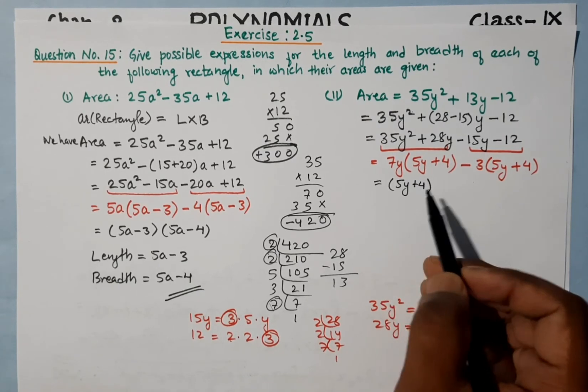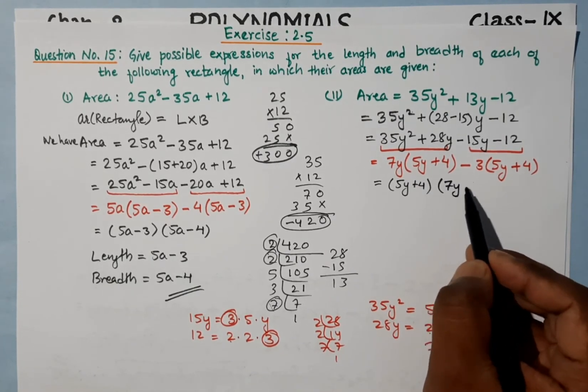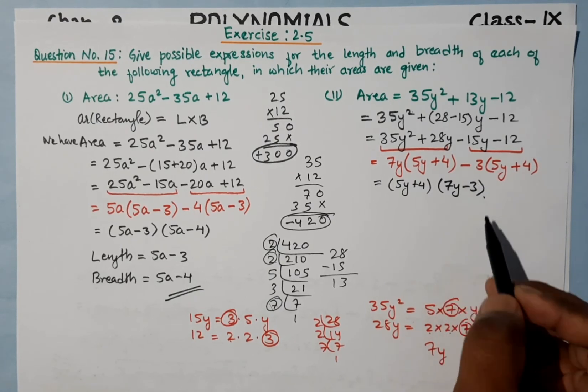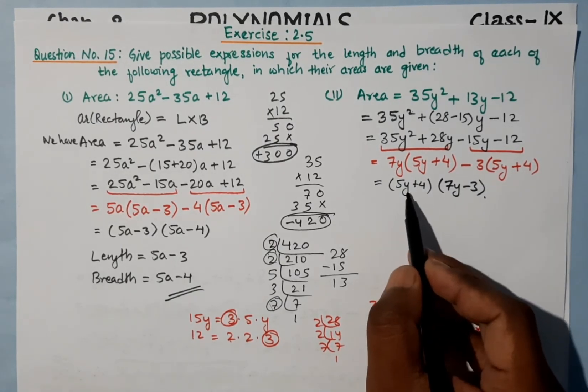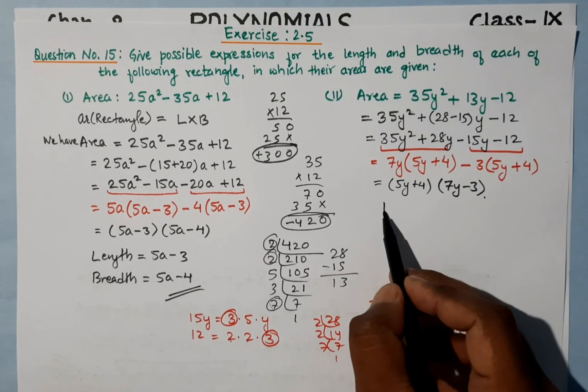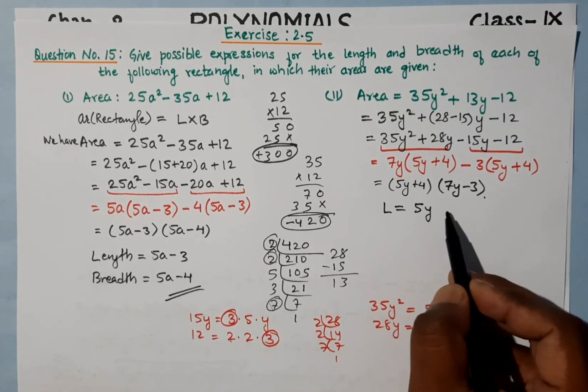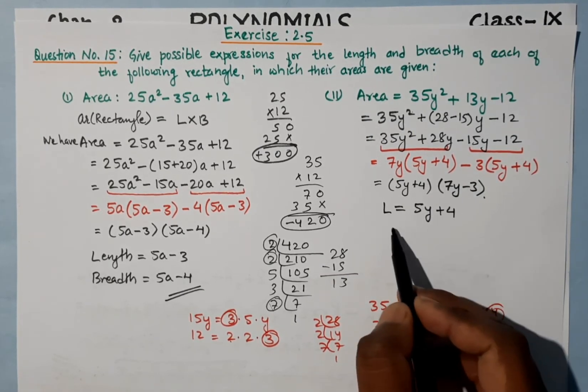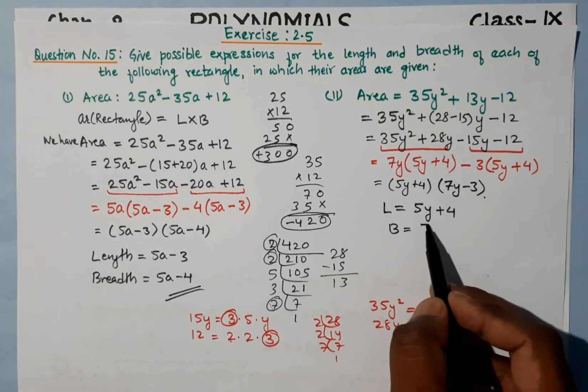The brackets are now the same: (5y + 4) is common. The remaining bracket is (7y - 3). So we have (5y + 4)(7y - 3).